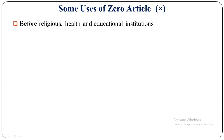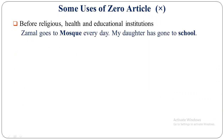Before religious, health, and educational institutions: 'Jamal goes to mosque every day' — mosque is a religious institution. 'My daughter has gone to school' — an educational institution. No article is used when the main purpose of visiting is the institution's primary function: Jamal goes to mosque to pray, my daughter goes to school to study or teach. If you have any other purpose, then you should use THE before that kind of noun.